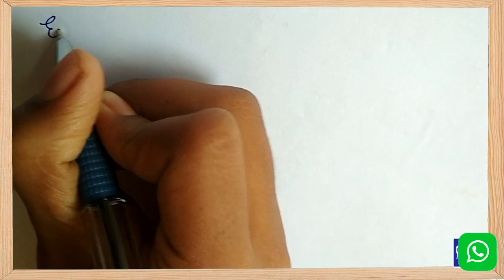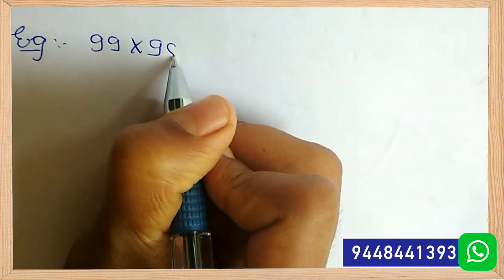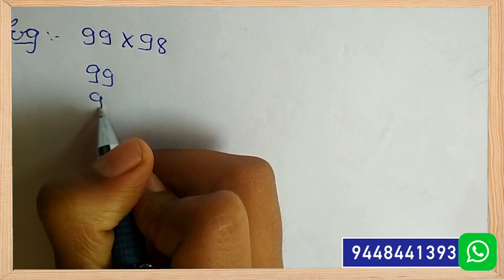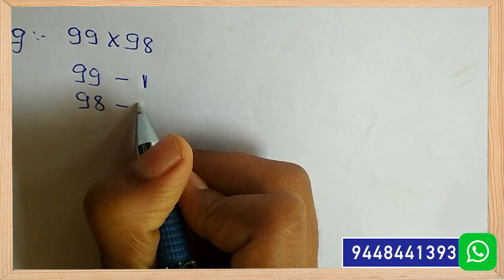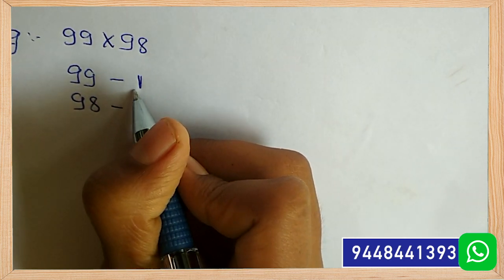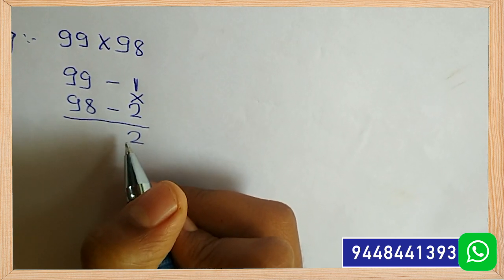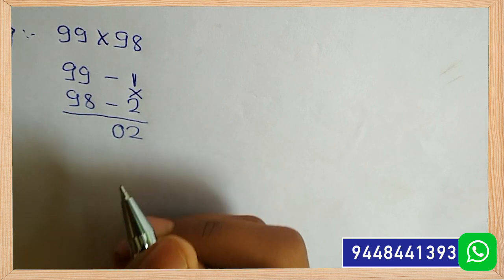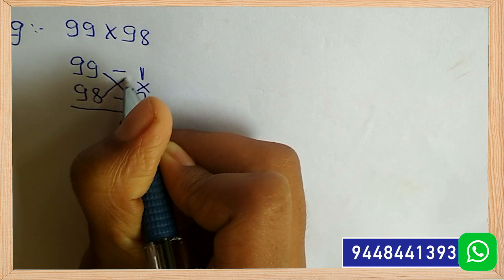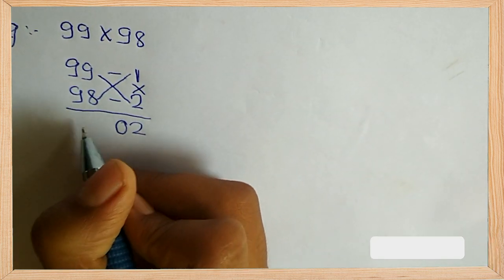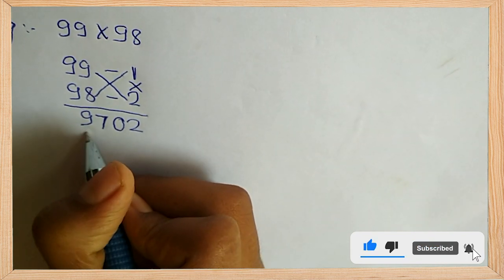Second example: 99 into 98. First, take the difference of two digits with 100. Here, 100 minus 99 is 1 and 100 minus 98 is 2. Multiply 1 into 2, that is 2. As we are taking a two-digit number, we have to add 0, making it 02. Next, take 99 minus 2 or 98 minus 1 — both give the same answer, that is 97. So the total answer is 9702.